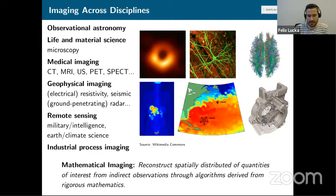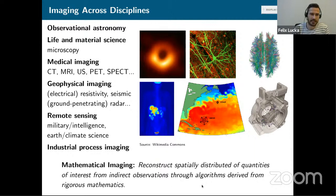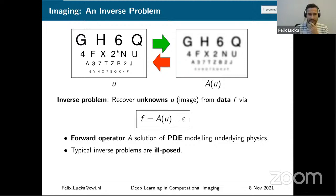As mathematicians, to abstract this a bit: mathematical imaging always wants to reconstruct some spatially distributed quantities of interest from indirect observations, linking them through algorithms derived from rigorous mathematics. This makes imaging a classical inverse problem. You have unknowns u — the image — and some indirect observational data f, linked by an equation where unknowns map to data plus noise. This mapping is the forward operator, which models all the physics of the imaging modality, typically taking the form of a solution operator of a partial differential equation.